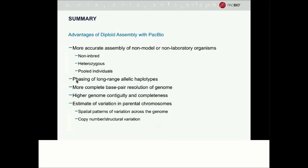To summarize the advantages of diploid assembly with PacBio data for insect genomics: with this workflow we're able to more accurately assemble non-model and non-laboratory organisms — organisms that may be non-inbred, heterozygous, or even pooled individuals in a single sequencing project. With PacBio assembly and Falcon Unzip, we accomplish phasing of long-range allelic haplotypes, more complete base-pair resolution of the genome, higher genome contiguity and completeness, and we can even estimate variation between parental chromosomes, including spatial patterns of variation across the genome and copy number or structural variation between starting alleles.